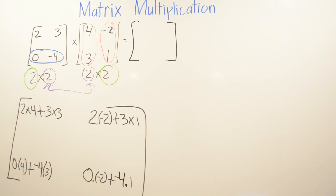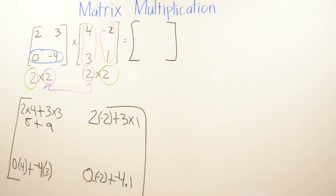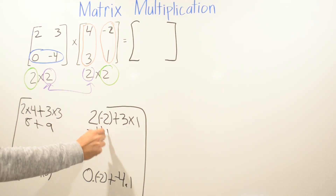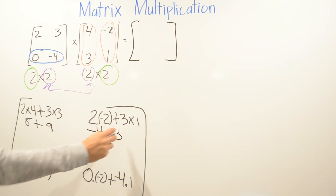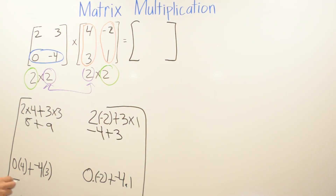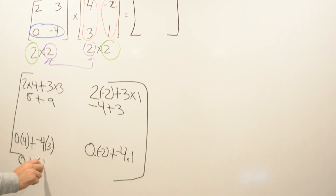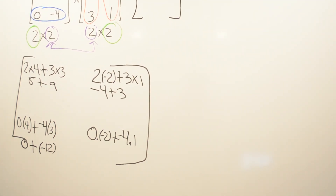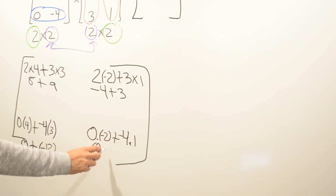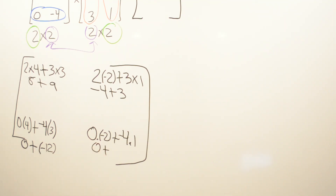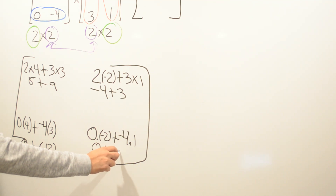Now we just simplify and add all the numbers. 2 times 4 is 8; plus 3 times 3 is 9. Then 2 times negative 2 is negative 4; plus 3 times 1 is 3. Then 0 times 4 is 0; plus negative 4 times 3 is negative 12. And 0 times negative 2 is 0; plus negative 4 times 1 is negative 4.